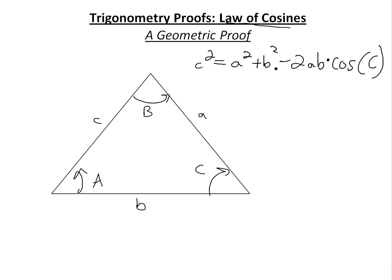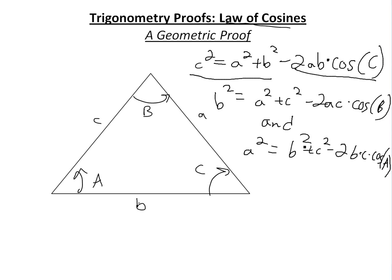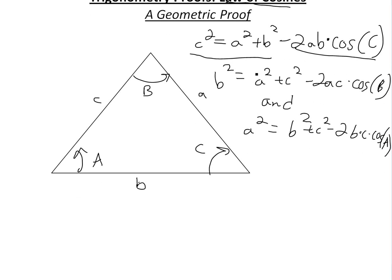This is similar to the Pythagorean theorem except you have this extra term. It's actually consistent with the Pythagorean theorem as well — you'd have cosine C equal to zero. This is similar for all the lengths, so you also get B squared is equal to A squared plus C squared minus 2AC cosine B.